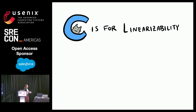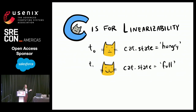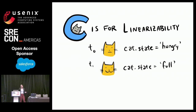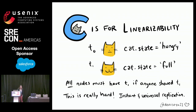The C in CAP actually means a very narrow definition of consistency — linearizability. If you have a database and one row that can only have one state at a given time, and two operations change that register, flipping a cat's state from hungry to full at T0 and T1, it means that all nodes in your cluster have to return that the cat is full if any client has seen that the cat is full.